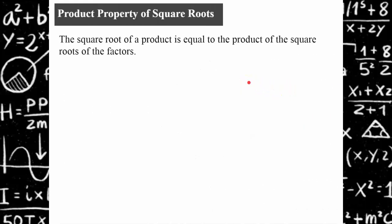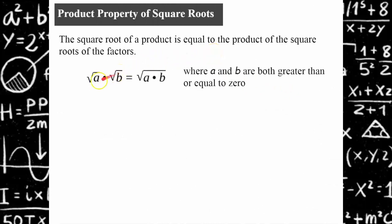The product property of square roots states that the square root of a product is equal to the product of the square roots of the factors. You can multiply underneath the radicands, or individually find the square root of each and then multiply them. This only works if the values of A and B are greater than or equal to zero, because you get an imaginary number if you try to find the square root of a negative value.